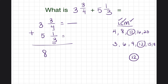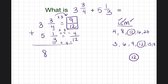Now I set each fraction equal to one with a denominator of twelve. Four times three equals twelve, so I multiply the numerator by three as well: three times three is nine, giving nine-twelfths. For the second fraction, three times four equals twelve, so I multiply the numerator by four: one times four is four, giving four-twelfths.